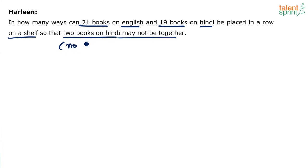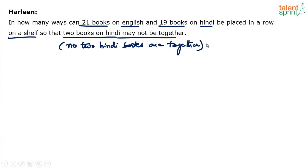No two Hindi books are together — meaning we need to find all arrangements where no two Hindi books are adjacent. If no two Hindi books are together, then no three can be together either. There should always be at least one book between any pair of Hindi books. So total: 21 English books and 19 Hindi books, arranged so that the Hindi books are never together.